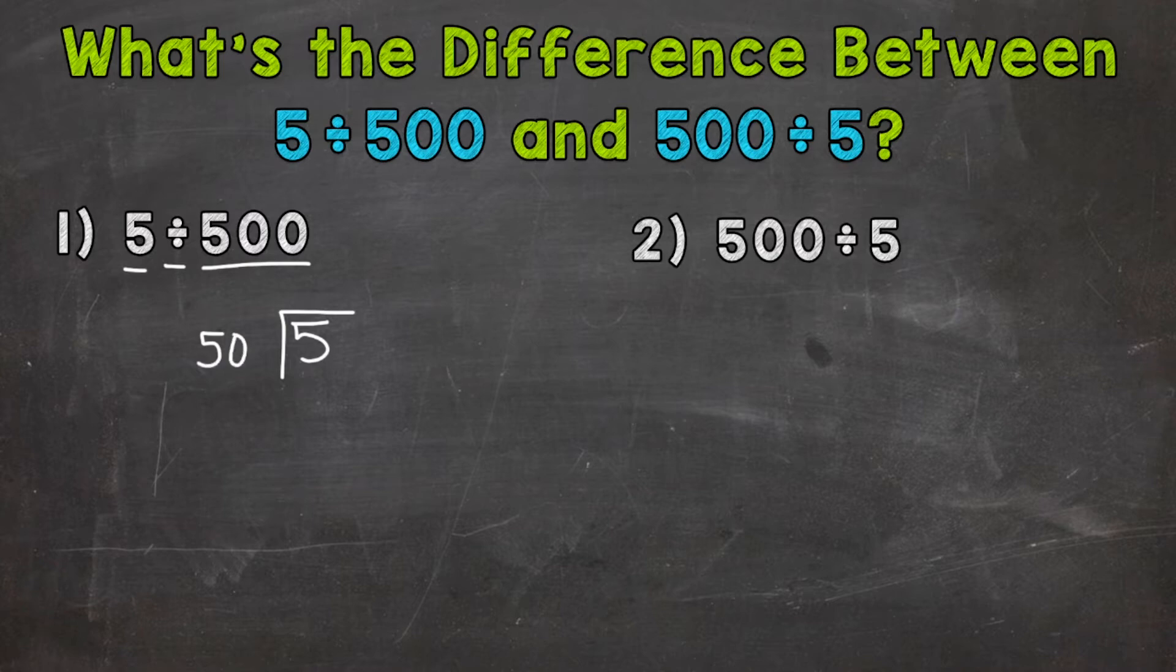Now, that problem may look a little off or incorrect, but it actually is set up correctly. So let's think about this situation. 5 divided by 500. So we're starting with 5 wholes and splitting those 5 wholes into 500 equal groups. So our answer is going to be less than a whole.